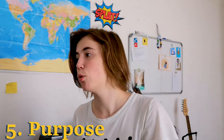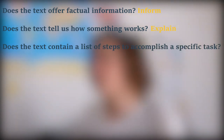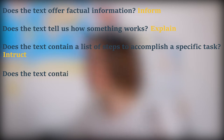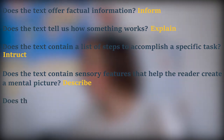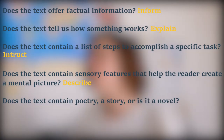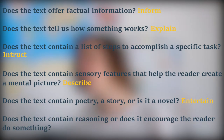The purpose of a text is simply the reason the author wrote it. A text may have more than one purpose, but one will tend to stand out above the rest. When determining purpose, here are a few questions you can ask: Does the text offer factual information? Then its purpose is probably to inform. Does the text tell us how something works? Then its purpose is probably to explain. Does it contain a list of steps to accomplish a task? Then its purpose is to instruct. Does it contain sensory features that help the reader create a mental picture? Then its purpose is to describe. Does it contain poetry, a story, or is it a novel? Then its purpose is to entertain. Does it contain reasoning or encourage the reader to do something? Then its purpose is to persuade.